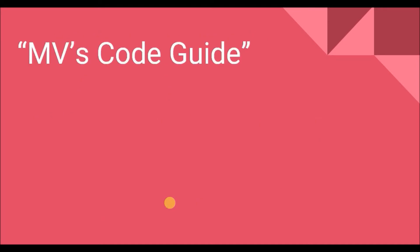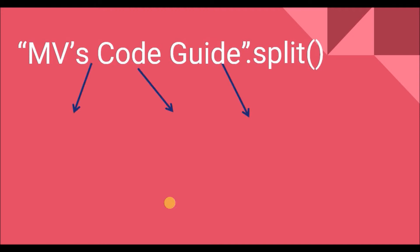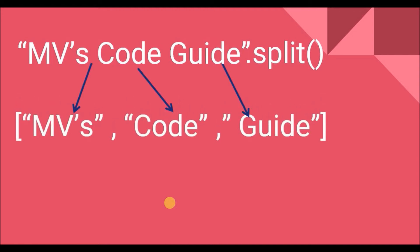The moment I split these words, it will be easy for me to reverse the order into 'guide code MVs'. We have a special method in the string class to split words into a list of items — that is the split method. The split method splits the words of a string and returns a list of items, where those items are the words inside the string. So 'MVs code guide' becomes a list, indexed at position 0, 1, and 2.